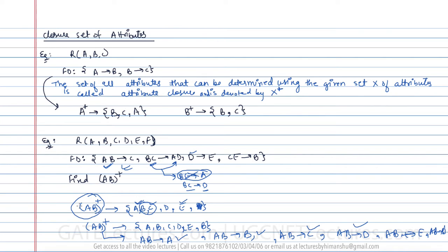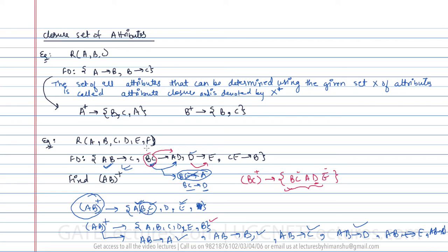Now let us find BC closure from the same example. With the help of BC I can determine BC itself. From BC→AD, I can determine A and D. With D I can determine E. Now with CE I can determine B, but B is already included. Notice that F does not appear in any right-hand side reachable from BC, so we cannot determine F. The BC closure is {B, C, A, D, E}.